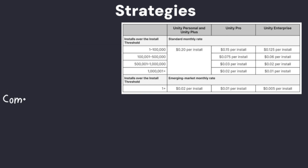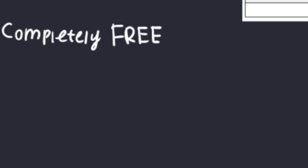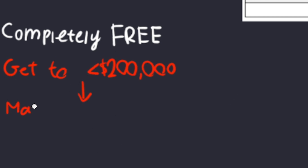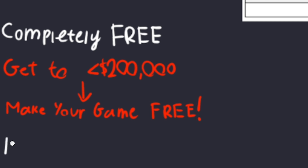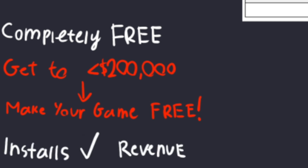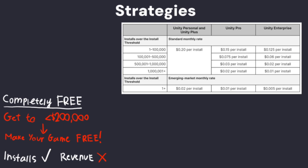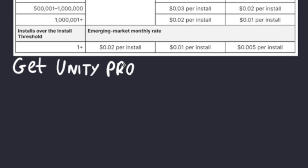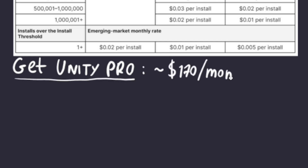Let's talk about some strategies to avoid these fees. Speaking as a solo developer, the best way to use the engine completely free is to get really close to the $200,000 threshold and then make your game completely free, assuming you sell on Steam. This way you never exceed the revenue threshold and never satisfy both conditions simultaneously, so you don't have to pay fees — though it means you stop earning too, which kinda sucks. The other option is to just get Unity Pro. For a solo developer it's $170 a month, which for a $10 game on Steam is around 35 sales — and when you're earning $200,000 a year, 35 sales a month shouldn't be an issue.